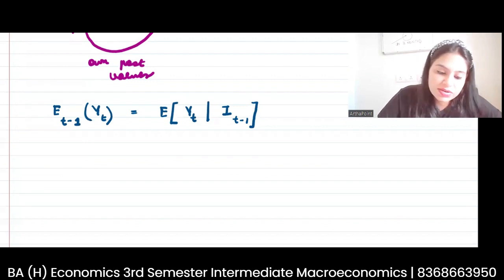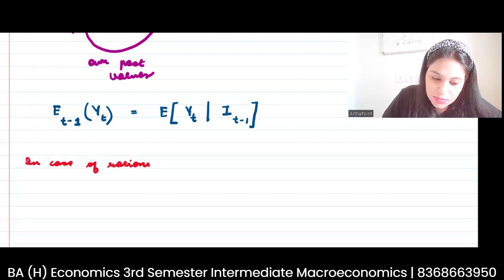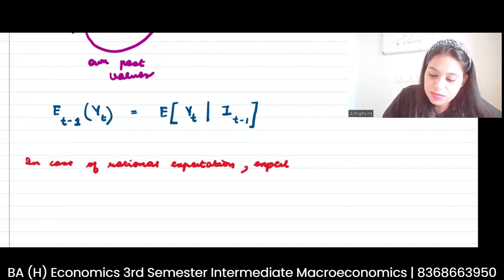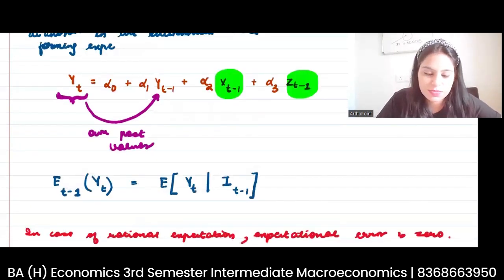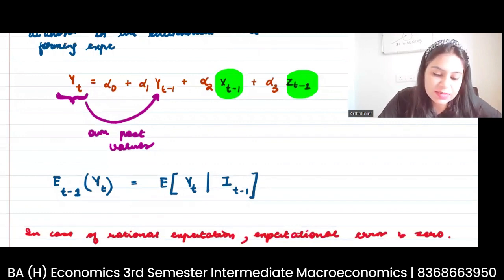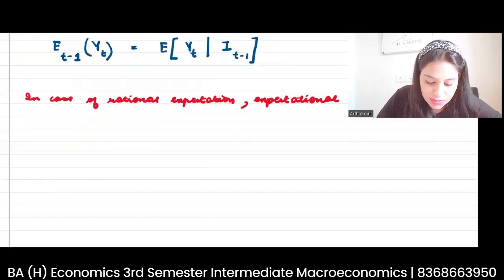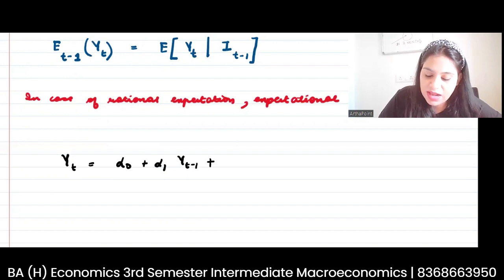In the case of rational expectation, the expectational error is 0. Let me prove this first — why the error is 0 — and then I will tell you when the error will come. Consider this equation: yt = α₀ + α₁yt-1 + α₂xt-1 + α₃zt-1. I am going to take expectation on both sides.